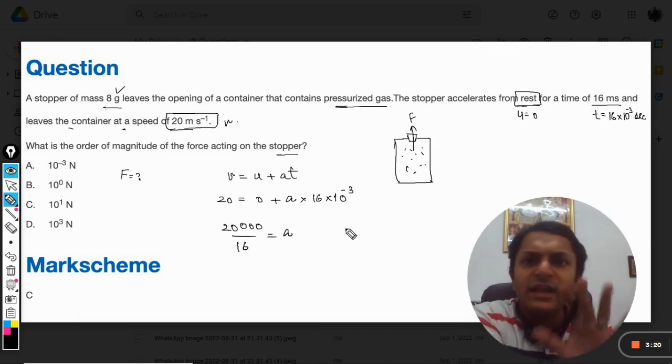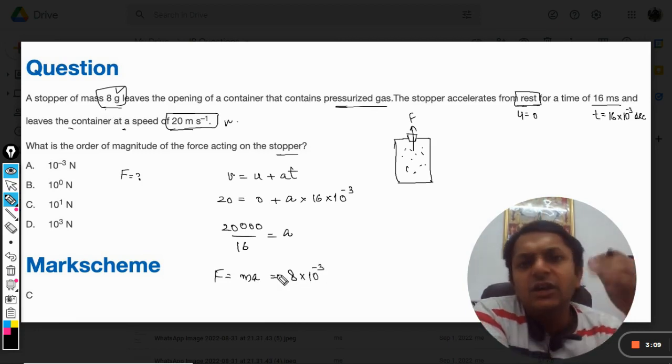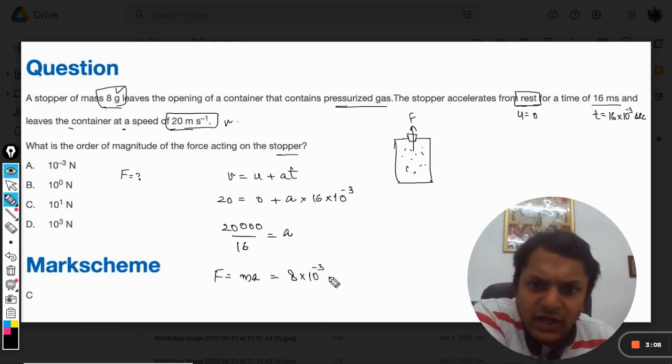We know that F = ma. Mass is 8 grams. Grams can be converted to kg by dividing by 1000. So m×a, where acceleration is 20,000 divided by 16.